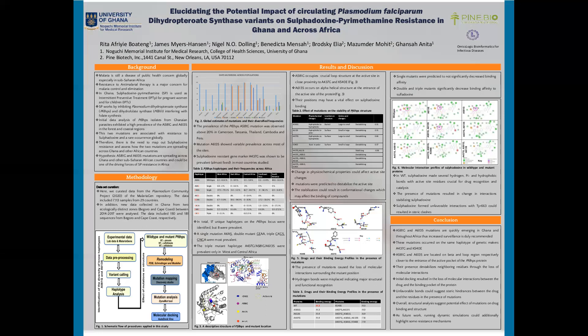Regarding haplotype analysis, 17 unique haplotypes were found across all regions, with eight having noticeable frequencies. Double mutant haplotypes bearing alanine 581 glycine and alanine 613 serine were only present in Cameroon in Central Africa. Most importantly, alanine 581 glycine and alanine 613 serine were found hitchhiking with the key mutation alanine 437 glycine, and this triple haplotype is sweeping from West Africa towards the East, suggesting these mutations are not being selected alone.